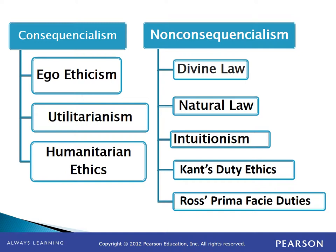This chart visualizes the moral theories we're going to consider throughout this course. On the left are the consequentialist theories: egoethicism, utilitarianism, and humanitarian ethics. We'll cover the first two in Chapter 2. Humanitarian ethics was developed by Jacques Thoreau — it is a hybrid form of utilitarianism with a lot of egoethicism, and also contains elements from non-consequentialist theories, but it remains primarily consequentialist. We won't deal with that until Chapter 8.